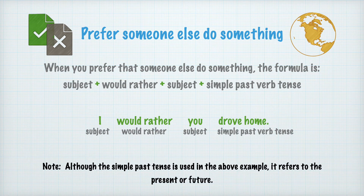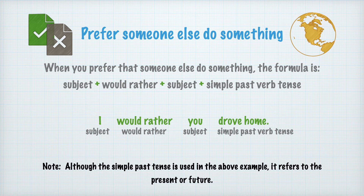Prefer someone else do something. When you prefer that someone else do something, the formula is: Subject plus 'would rather' plus subject plus simple past verb tense. Preferir que alguien más haga algo. Cuando prefieres que alguien más haga algo, la fórmula es: Sujeto más 'would rather' más sujeto más el verbo pasado simple. I would rather you drove home. Preferiría que tú conducieras a casa.